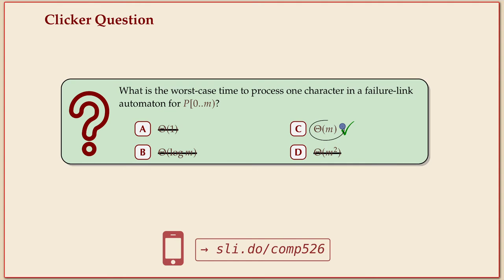Why can it not be worse than m? Well, processing a character stops as soon as you take an edge that consumes that character. So you can only have more effort if you have to follow failure links, because that's the only two things that this automaton can do. One stops the processing and the other keeps going.